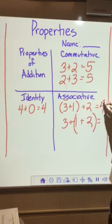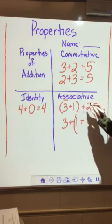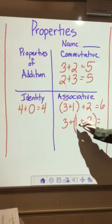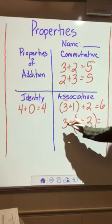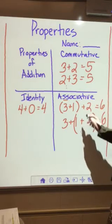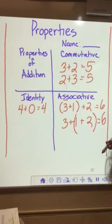3 plus 1 plus 2 does not equal 4. That would be wrong. 3 plus 1 is 4, plus 2 is 6. 1 plus 2 is 3. 3 plus 3 is 6. It does not matter how I group these numbers. The answer is gonna stay the same.